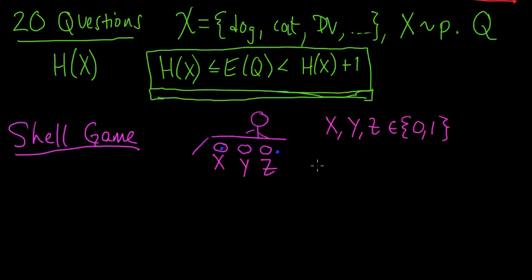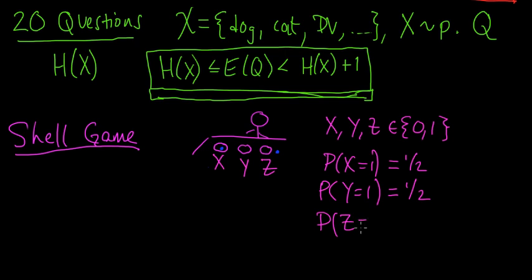And let's suppose further that the probability. Let's put some probabilities on these. Let's say the probability that X is one, probability that the marble is under X is a half, probability that Y equals one is a half. And suppose we know this, suppose we know somehow these probabilities. And the probability that Z is one is zero.